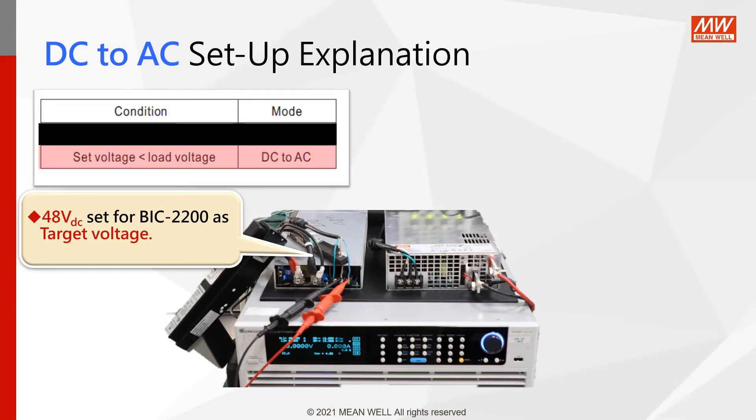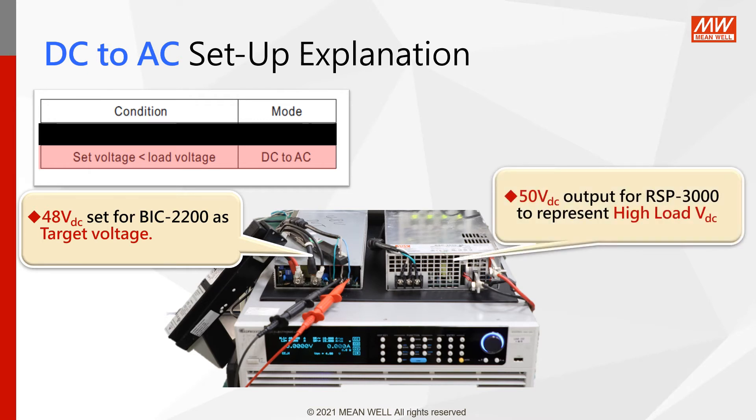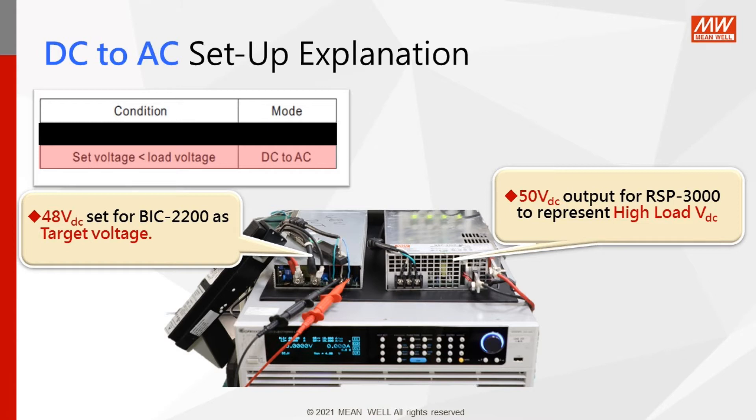Let's do another example by taking RSP-3000, the power supply with 50 volt output to simulate a higher voltage and connect it to the DC end of the BIC. The BIC will change to DC to AC conversion, within 1 millisecond.